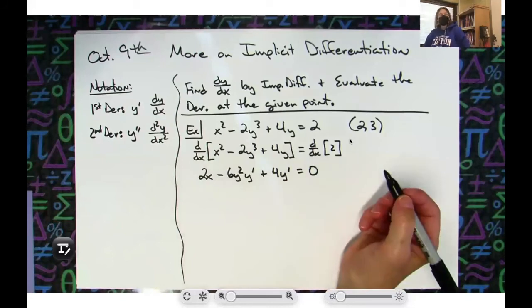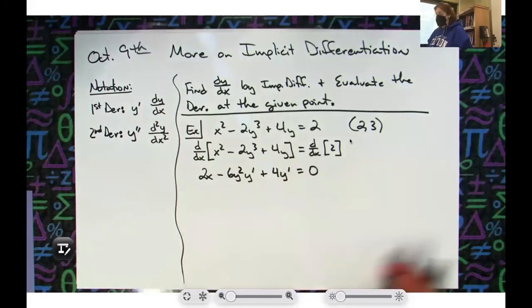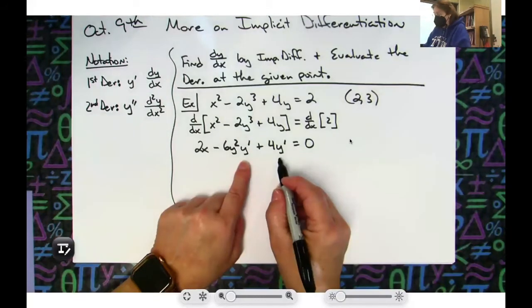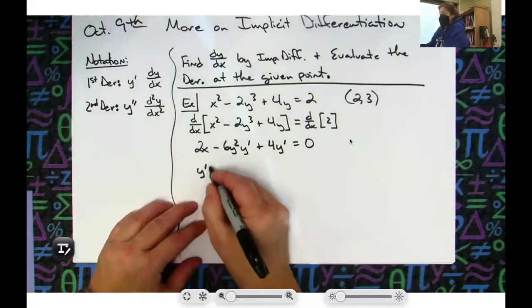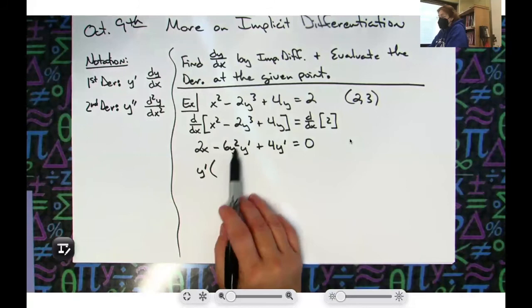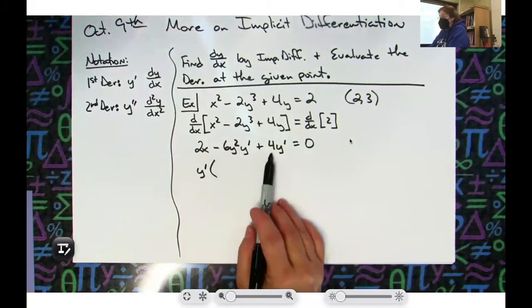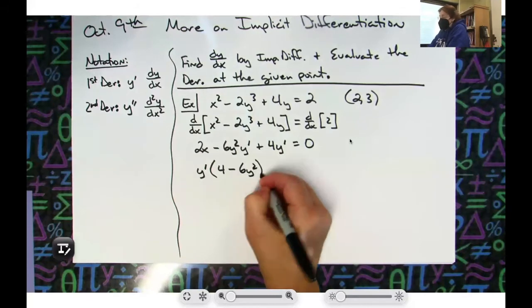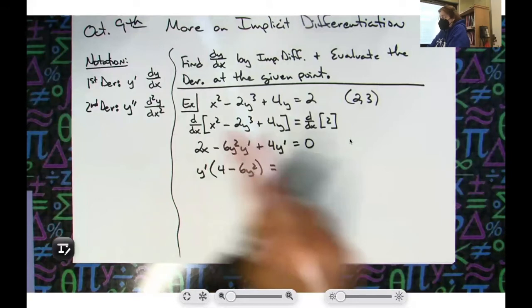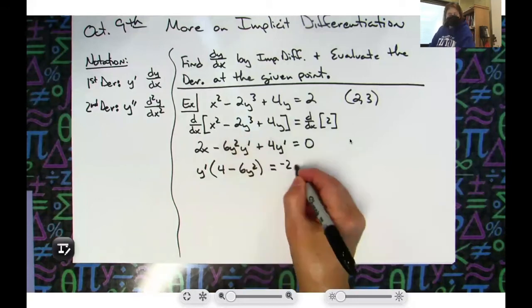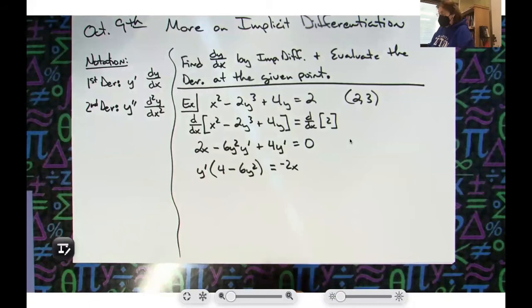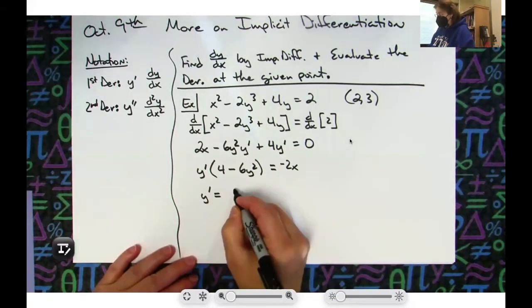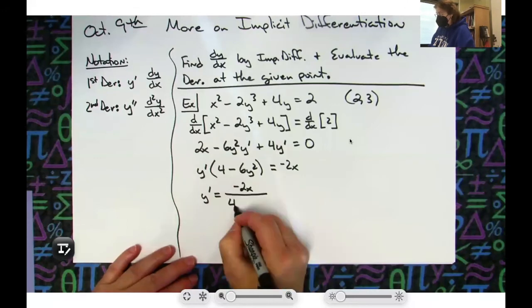Okay, all y prime terms stay on the left, all other terms go to the right. I'm going to go ahead and factor out a y prime because we talked about that yesterday - may kind of help one of the steps. Now with this 6y squared being the negative, I'm going to go ahead and rearrange the terms - I'm going to go 4 minus 6y squared just so I don't have a negative in front. Moving that 2x over, I get negative 2x, and then I can divide. So y prime is going to be a negative 2x all over a 4 minus 6y squared.